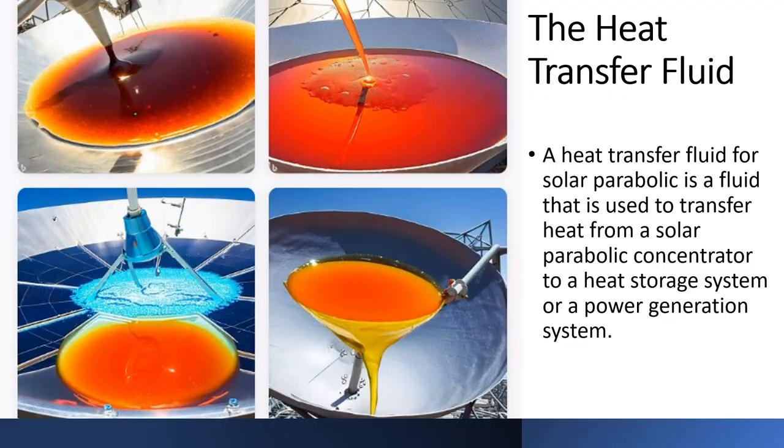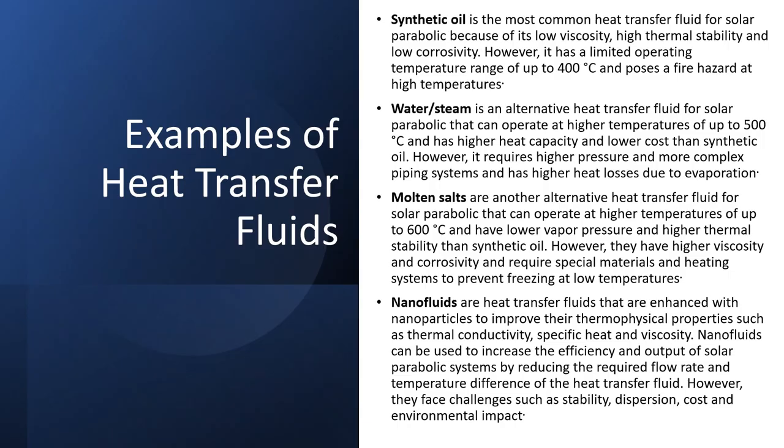A heat transfer fluid for solar parabolic is a fluid that is used to transfer heat from a solar parabolic concentrator to a heat storage system or a power generation system. Here are some examples of heat transfer fluids: synthetic oil, water/steam, molten salts, and nanofluids.